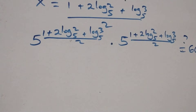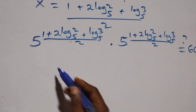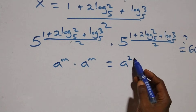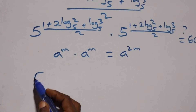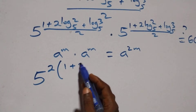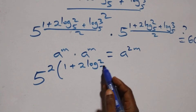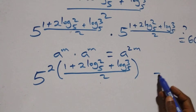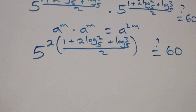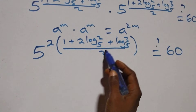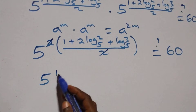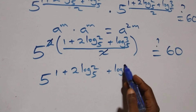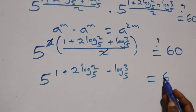Since we have the same base multiplying with the same exponent, we apply the rule a^m times a^m equals a^(2m). We write this as 5 raised to power 2 times (1 plus 2 log 2 base 5 plus log 3 base 5), all over 2. The 2 and the 2 in the denominator cancel, leaving 5 raised to power 1 plus 2 log 2 base 5 plus log 3 base 5, equals 60.